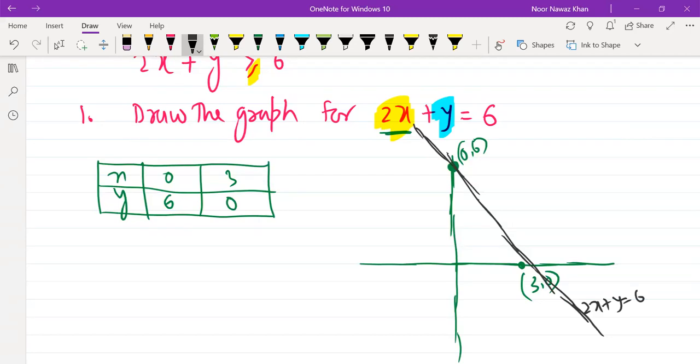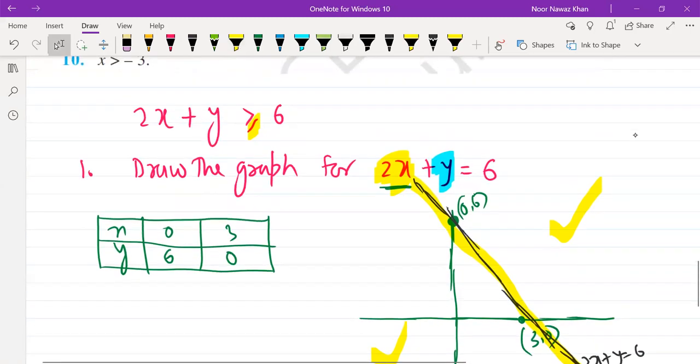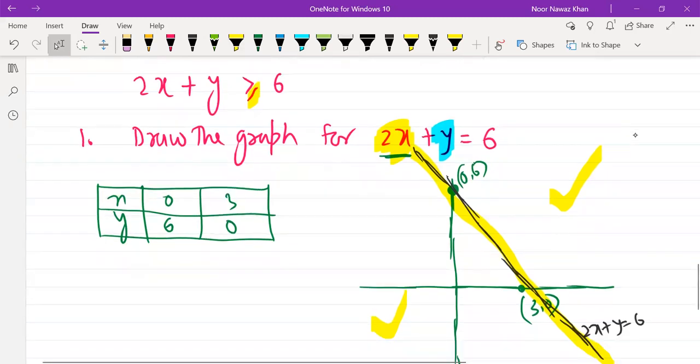Now, what we do is divide the plane into three parts. On the line, the points on the line are the points where the sum is 6, 2x plus y is 6. Now, you have above the line points and below the line points. So, you have to see if you are satisfied with this equation above the line points or below the line points. So, what do we do? Let's check.